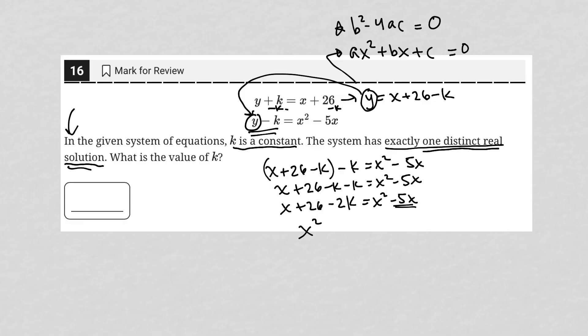So I'm going to say this is x squared. Negative 5x minus x from both sides makes it a minus 6x. And then I'm going to subtract 26 plus 2k from both sides. So minus 26 plus 2k.